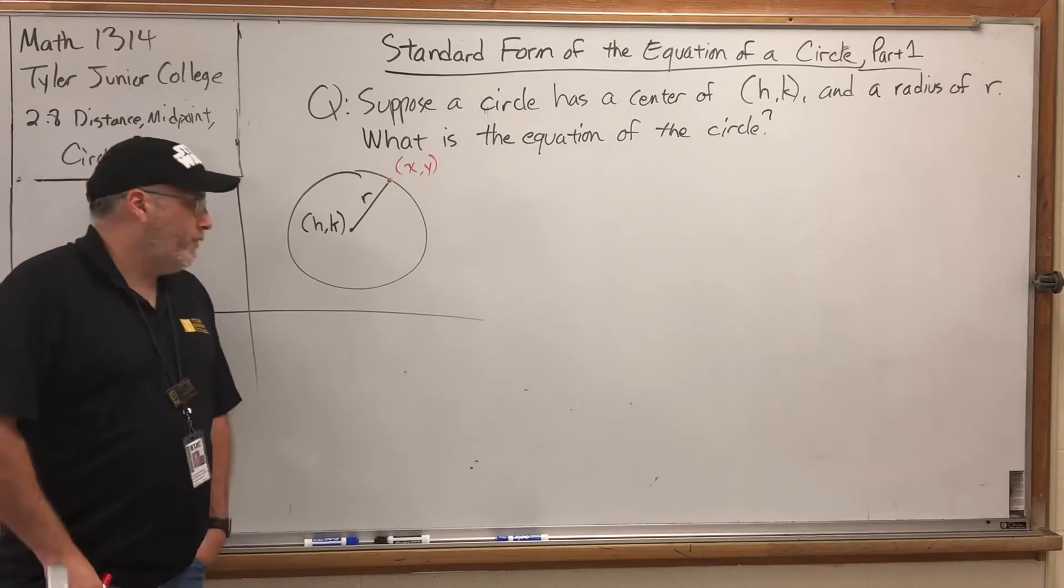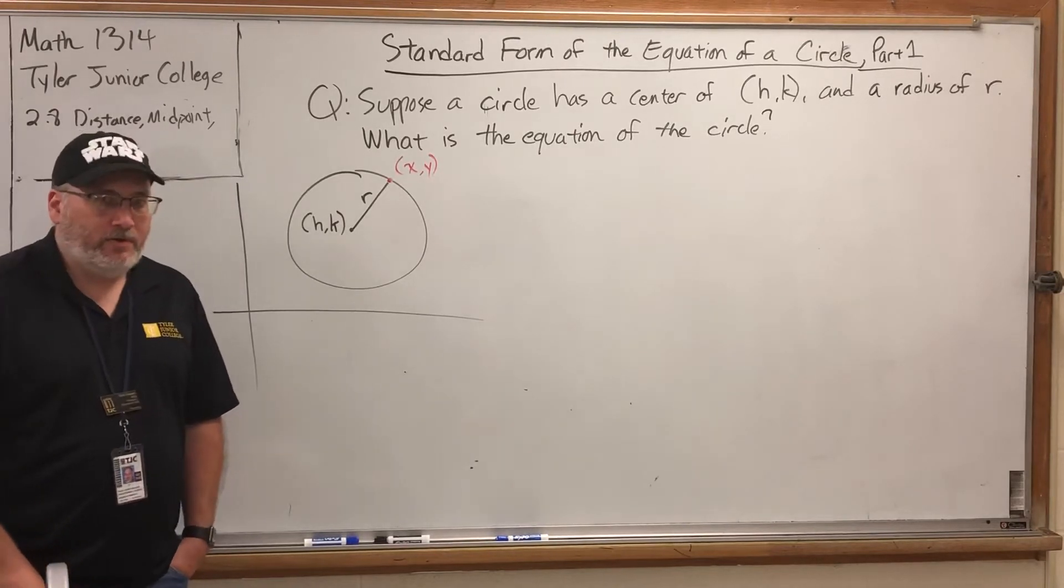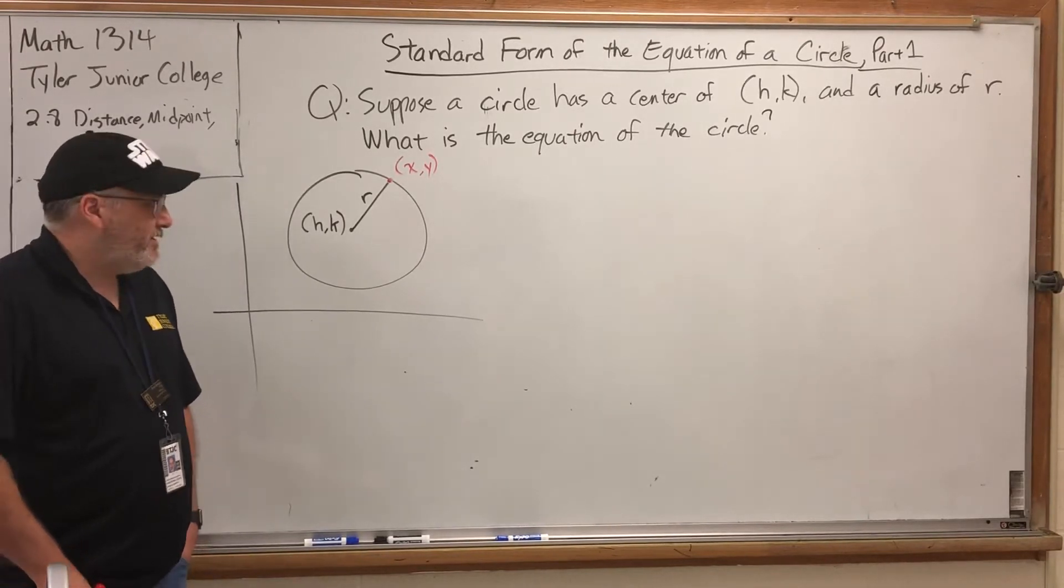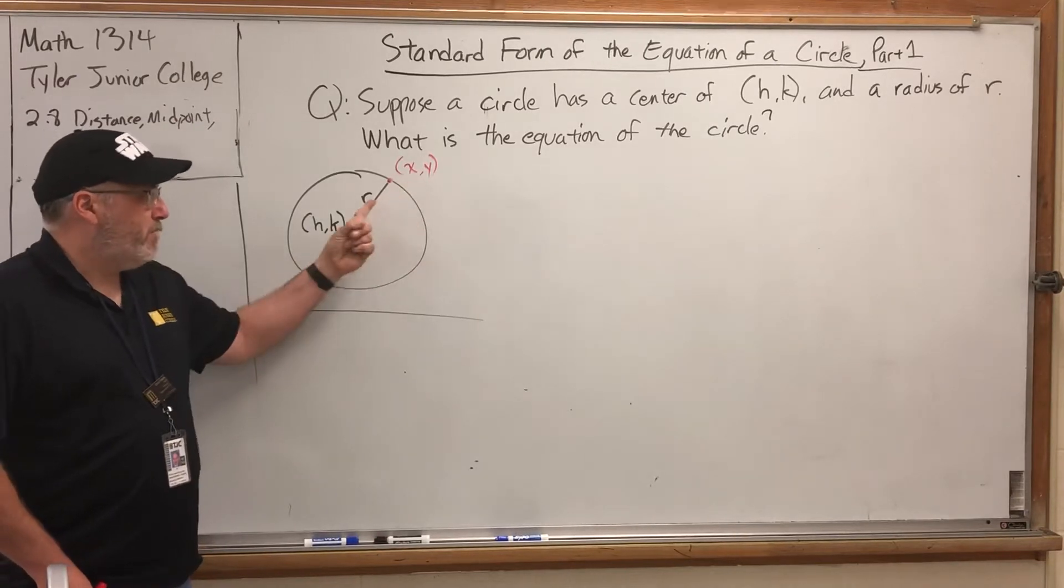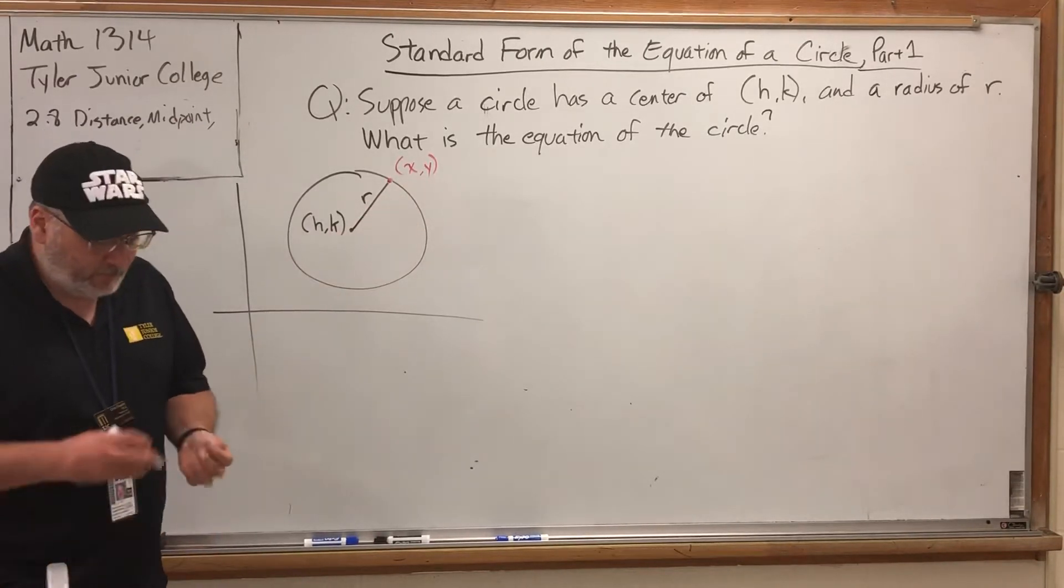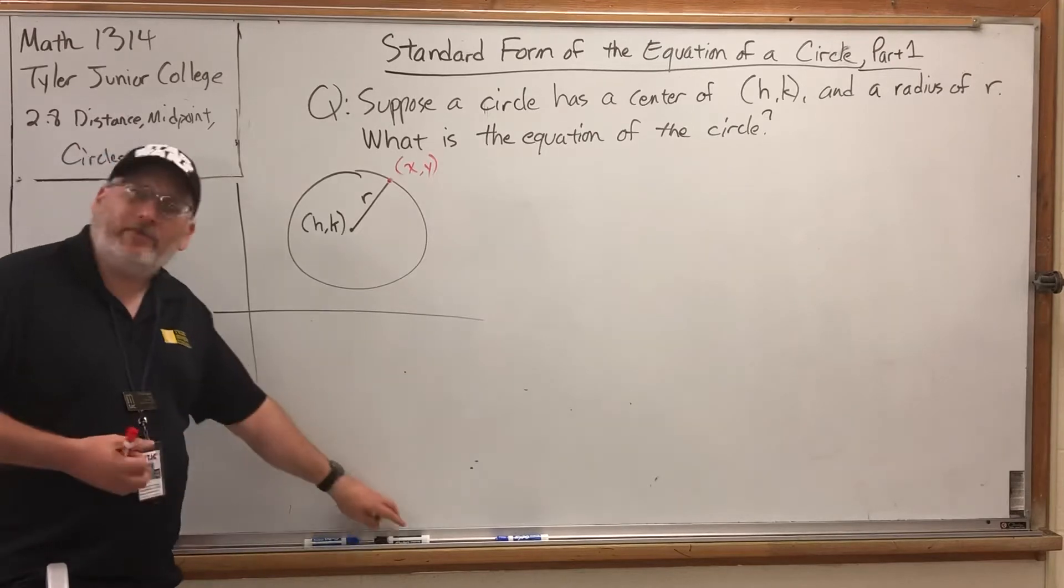What must be true in order for that point to be on the circle? Answer, the distance from the center to this point must equal a radius. Oh, wait a second. We have a formula for distance.